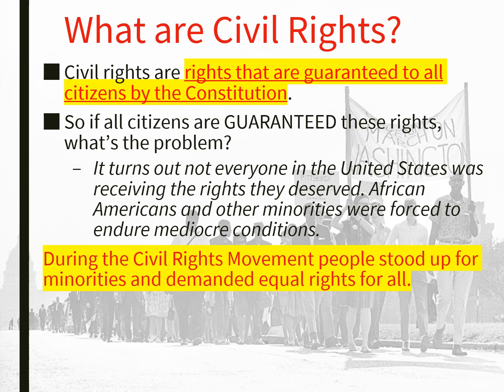First of all, what are civil rights? Civil rights are the rights guaranteed to all citizens by the Constitution. Remember, the United States is a constitutional republic, and there are rights written into the Constitution that all Americans have and cannot be stripped of. So if all citizens are guaranteed these rights, what's the problem? Not everyone in the United States was receiving the rights they deserved — specifically, African or Black Americans and other minorities were forced to endure mediocre conditions. During the civil rights movement, people stood up for minorities and demanded equal rights for all.